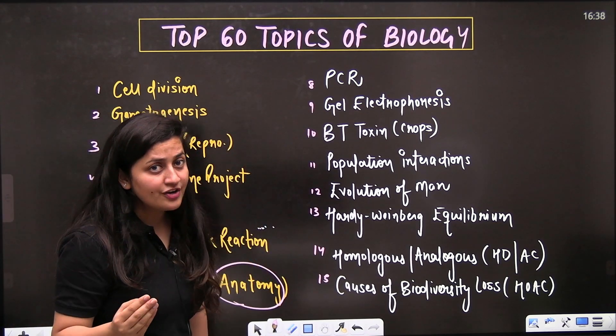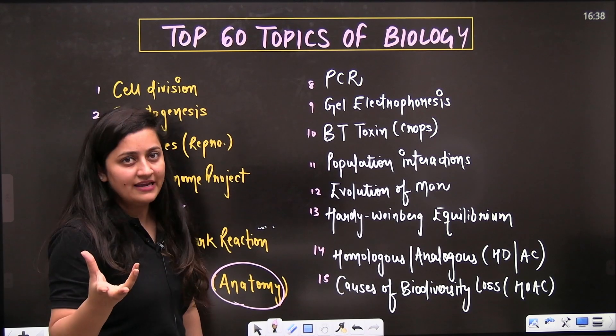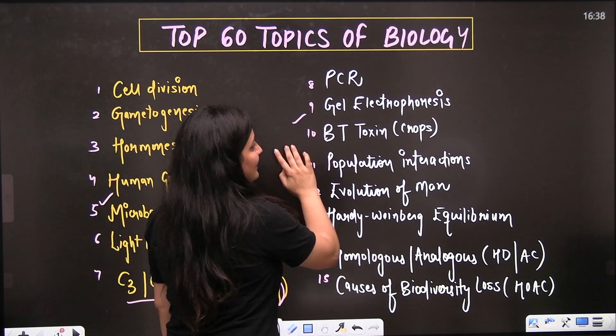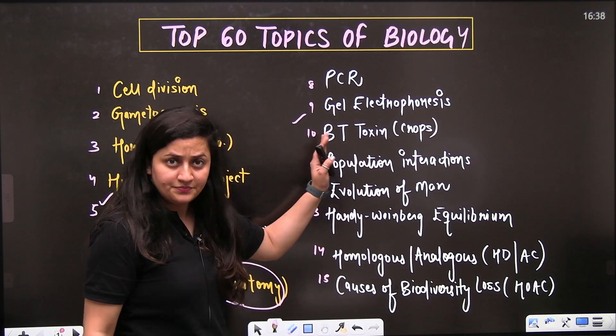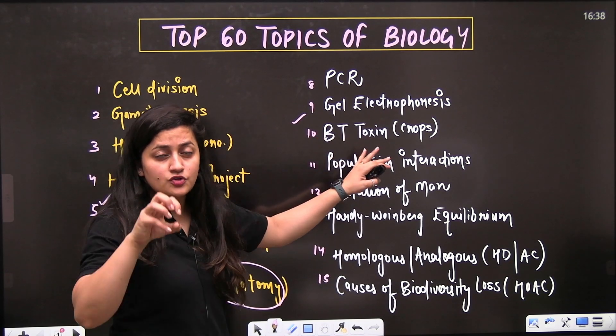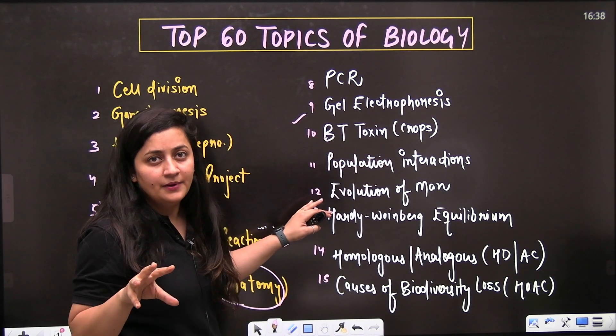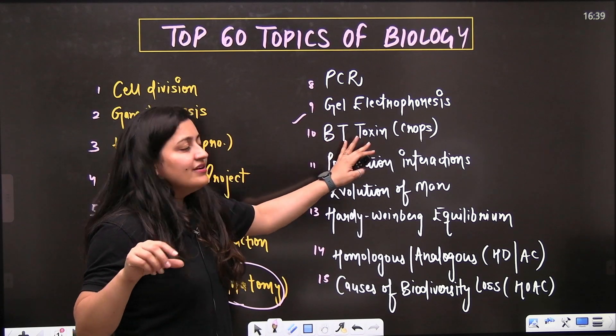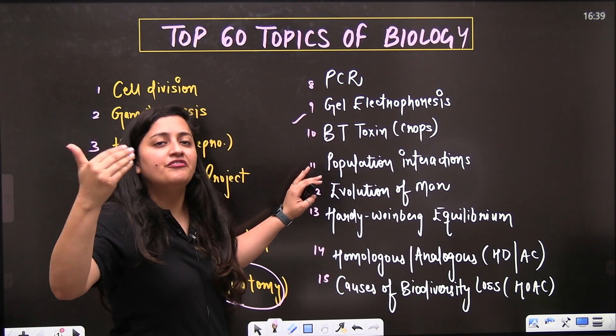Then comes PCR - polymerase chain reaction - a very easy and obviously important topic. Then comes gel electrophoresis, BT toxin, how that BT toxin is going to destroy that particular insect, and even different BT plants you should study and revise.